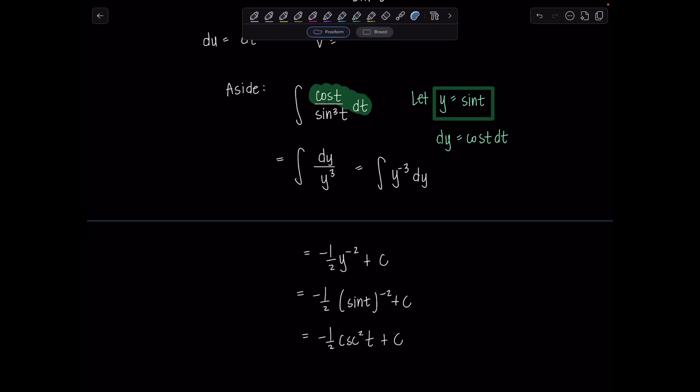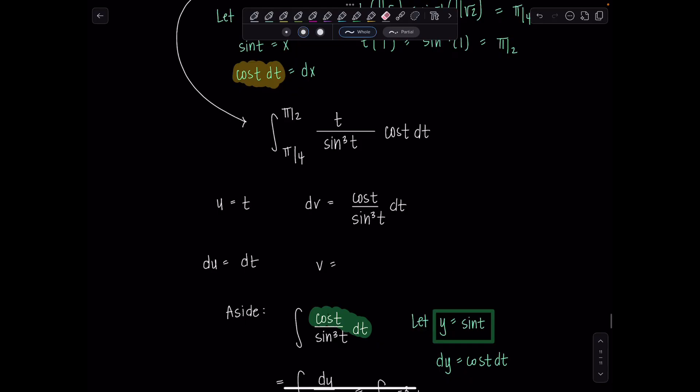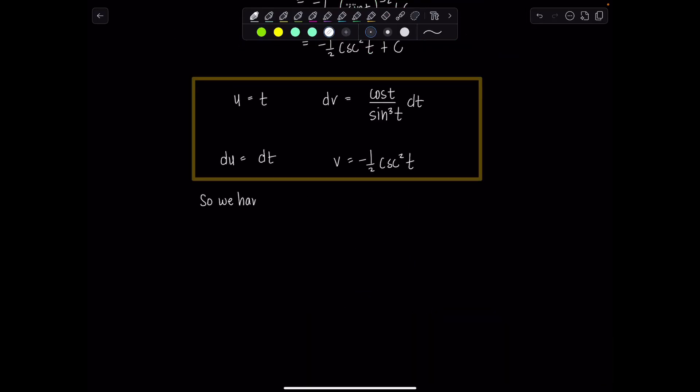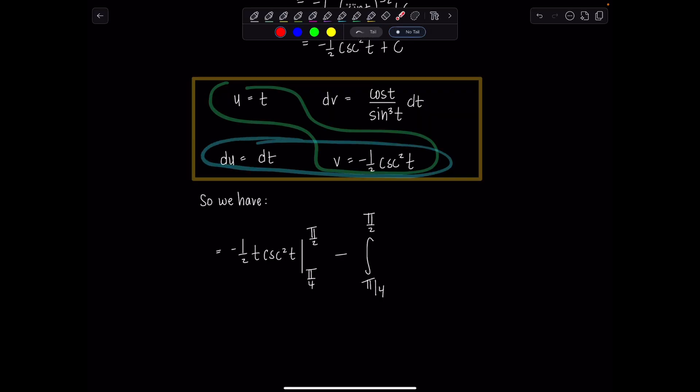So what does that mean for us? It means this negative one half cosecant squared t goes right here for v for our by parts. We have the following. So we'll have u times v t like so. So that'll be negative one half t cosecant squared t. Now that's not in an integral, right? That's going to get evaluated from pi over four to pi over two minus the integral from pi over four to pi over two of v du. Well, that'll be negative one half times cosecant squared t dt. That'll switch this to positive one half cosecant squared t dt. Good?